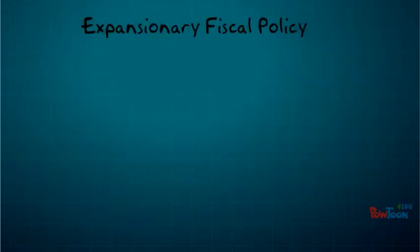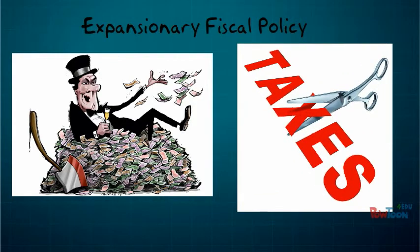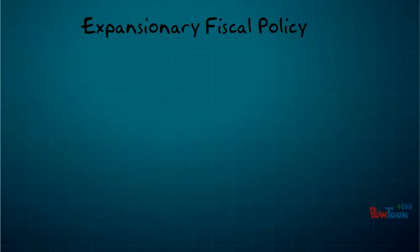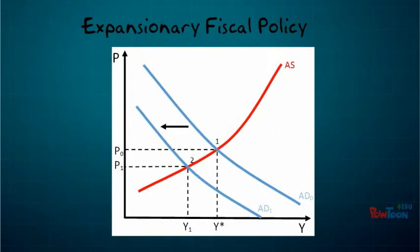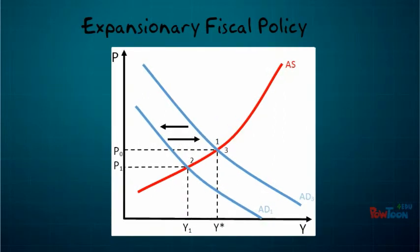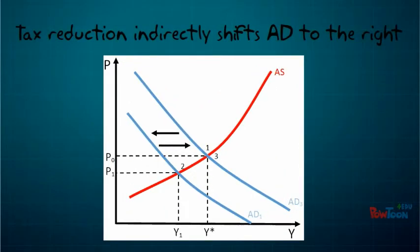The government must enable expansionary fiscal policy by either increasing government spending, reducing taxes, or both. An increase in government spending will directly push the AD curve back to the right to close the output gap. Reducing taxes will indirectly push the AD curve back to the right by increasing consumption.